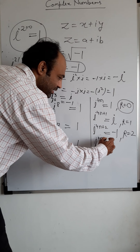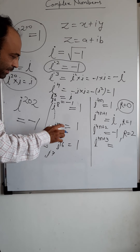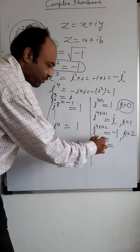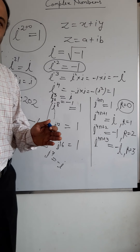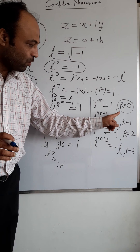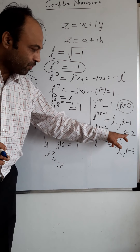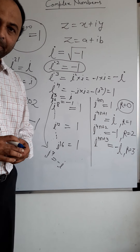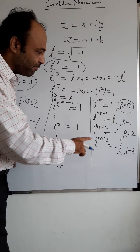Finally, i to the power 4n+3: for example i⁷ — i⁶ is minus 1, so i⁷ = minus 1 into i = minus i. So if remainder is 3 when dividing the power by 4, the value is minus i. Summary: remainder 0 → 1, remainder 1 → i, remainder 2 → minus 1, remainder 3 → minus i. You can also remember i² = minus 1 for derivation, but this pattern is essential for competitive exams.